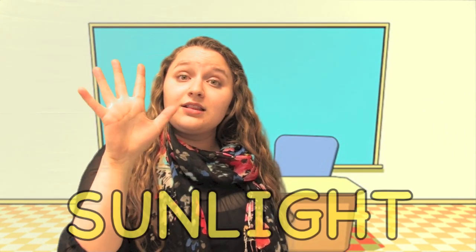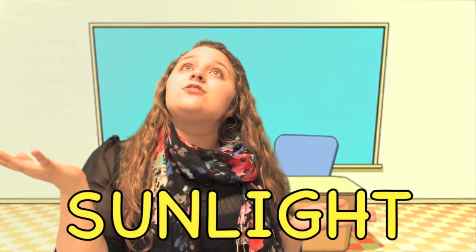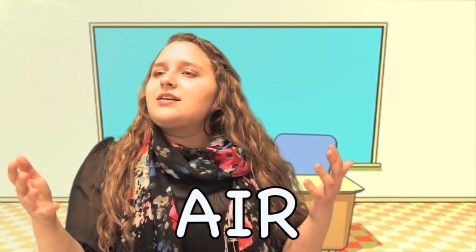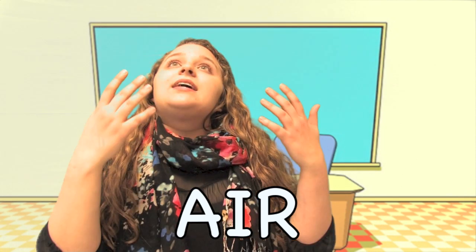Number three, plants need space. They need lots of space so they can grow big and strong. Number four, plants need sunlight. Sunlight gives plants energy. And number five is air. Air gives plants oxygen to help them breathe in and out.